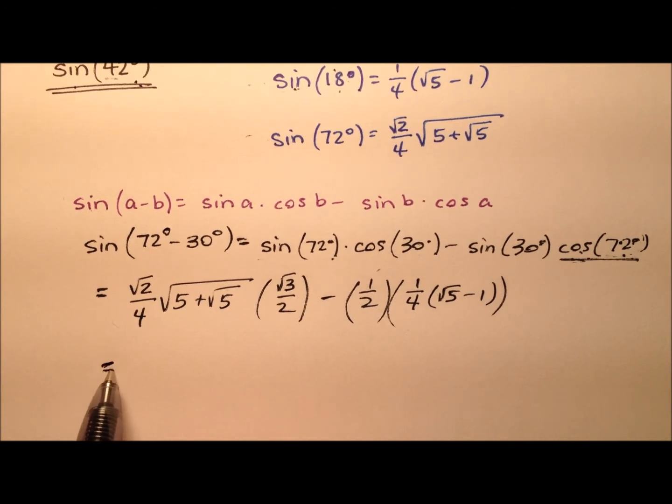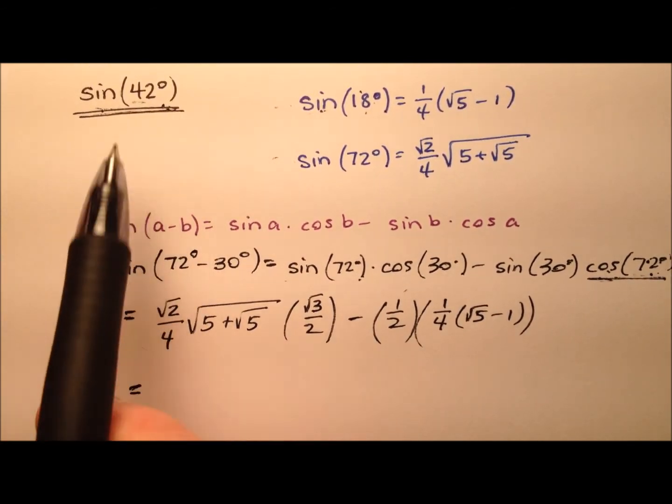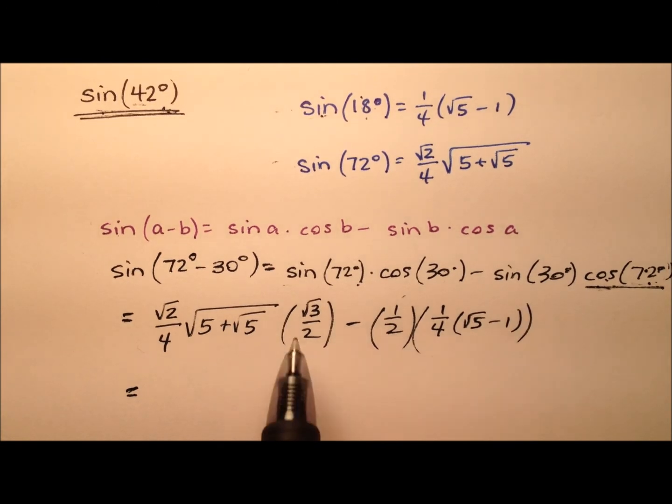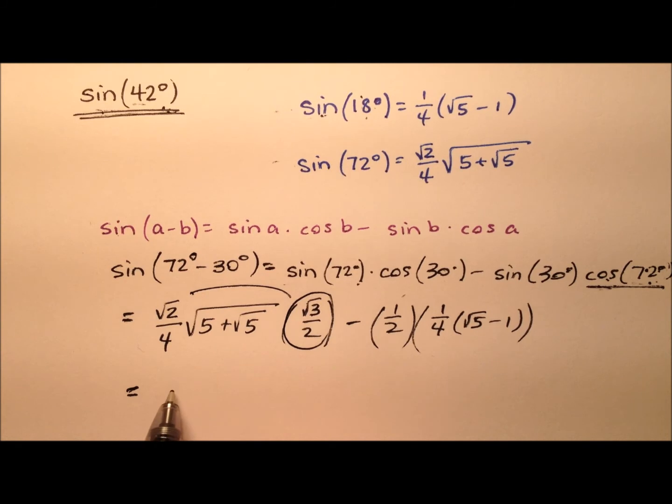So all we need to do now is just clean this expression up a bit, and then we have the exact value for the sine of 42 degrees. So I'm going to take this and multiply it out front by that, so we have ourselves a square root of 6 over 8, and then times this radical expression.